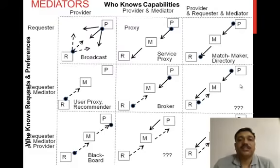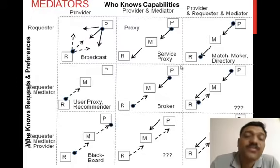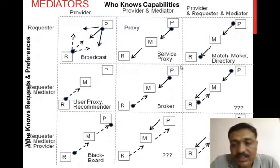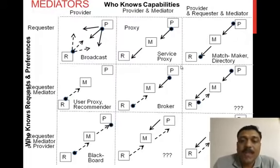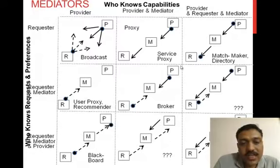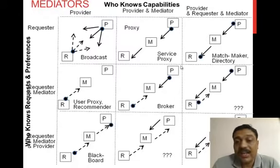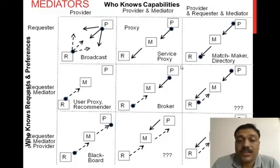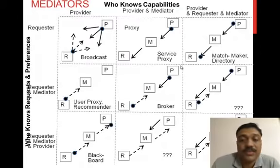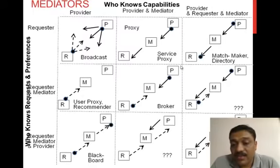When using a mediator, you have a requester and a provider, and both may be trying to broadcast some message. You need a matchmaker or a proxy kind of device which basically stores the capability of these advertisements that can be queried by the requesters. The requester can then choose and contact a particular service provider, and there is a broadcaster when these requesters and providers are advertising about themselves.